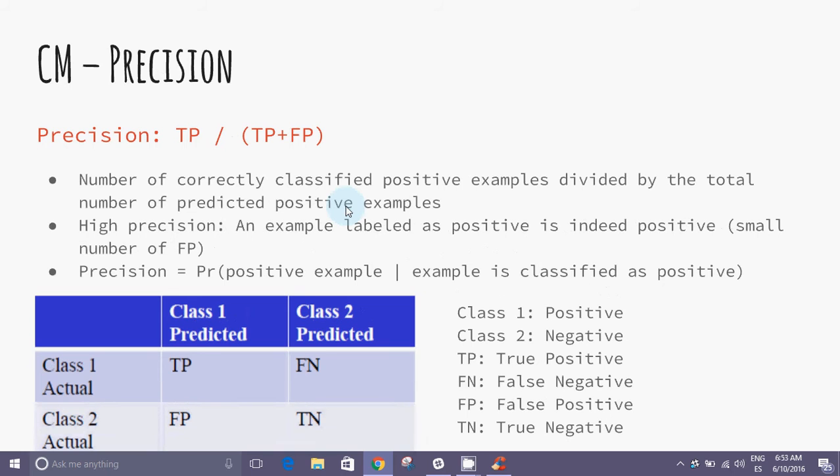The precision index is defined as the number of correctly classified positive examples divided by the total number of predicted or labeled as positive examples, i.e., the sum of the true positive and false positives. As in the case of recall, precision is inversely related to the number of false positives: the lower the number of false positives, the higher will be the precision rate. In terms of probability, precision is the probability of a positive example subject to the example being classified as positive.